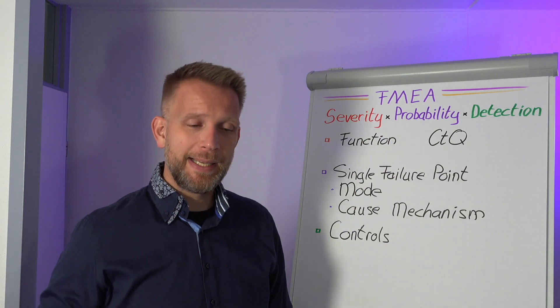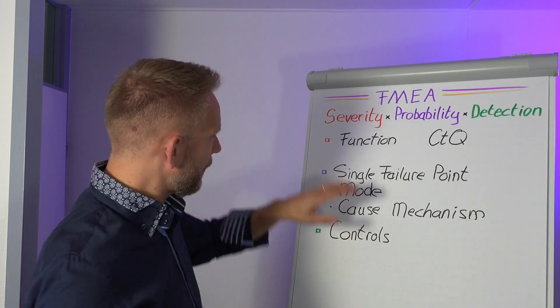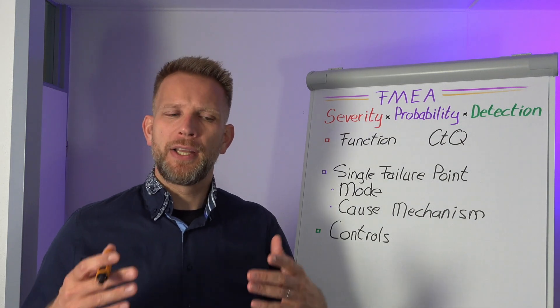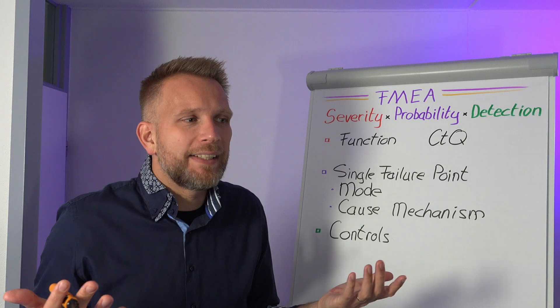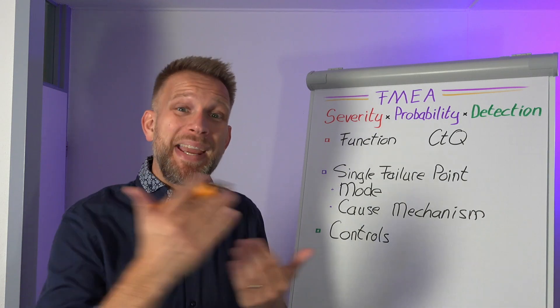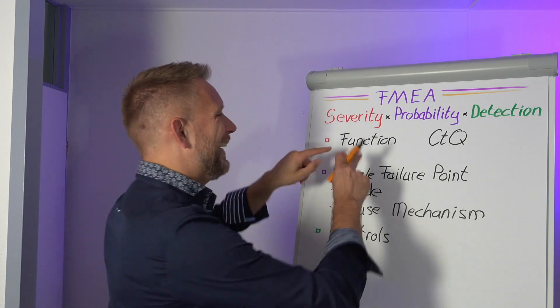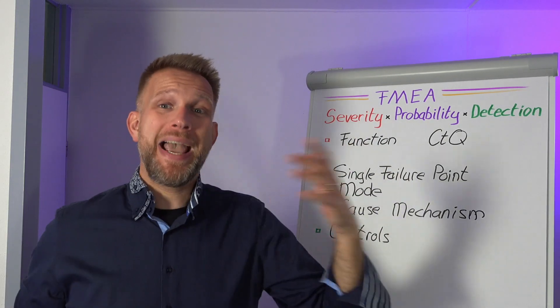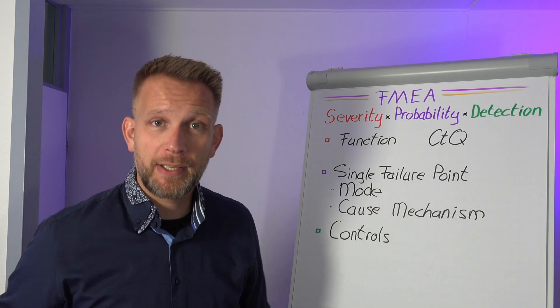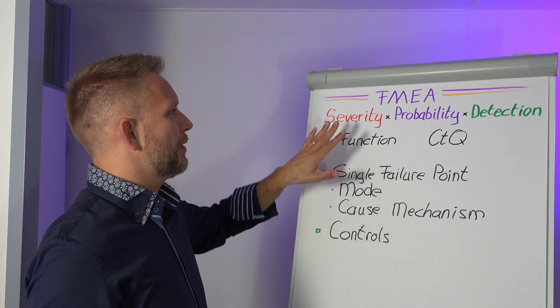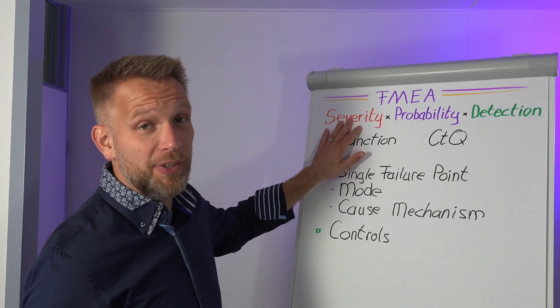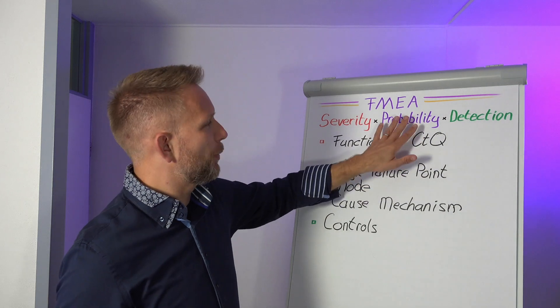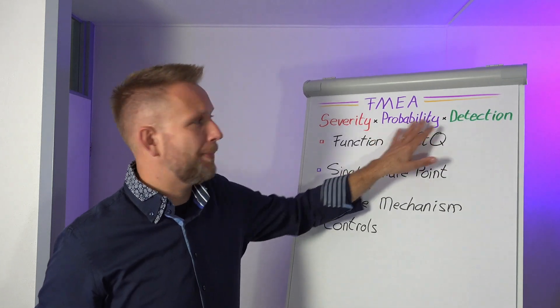As a rule of thumb, severity is the most difficult to affect because the things we're looking at, they're generally baked into the design, baked into the function of whatever product we're making. It's how bad is it when a specific failure occurs. Sometimes the product can indeed be re-engineered to remove it, but more likely we will be working on the probability of it happening and the detection.